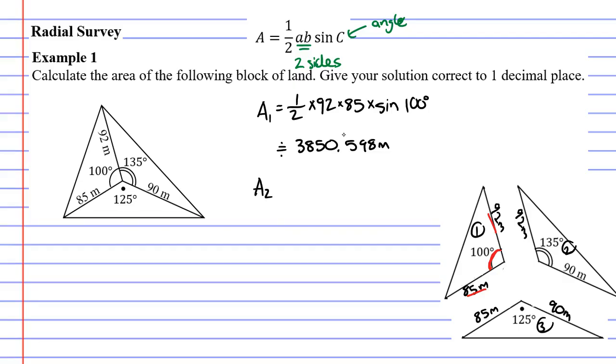Let's do the area of triangle 2. We follow the same process. It's half multiplied by the two sides. So triangle 2 has sides of 92 and 90. And then we multiply this by sine of the angle. For triangle 2 it's an angle of 135 degrees.